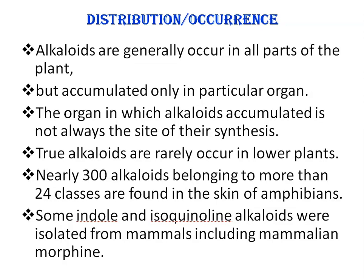Alkaloids are generally occurring in all parts of the plant but accumulated only in a particular organ. The organ in which alkaloids accumulate is not always the site of their synthesis. For example, the edible tubers of the potato plant are devoid of alkaloids, whereas the green parts contain the poisonous alkaloid known as solanine. Similarly, in tobacco plants, nicotine is produced in the roots and translocated to the leaves, where it accumulates.